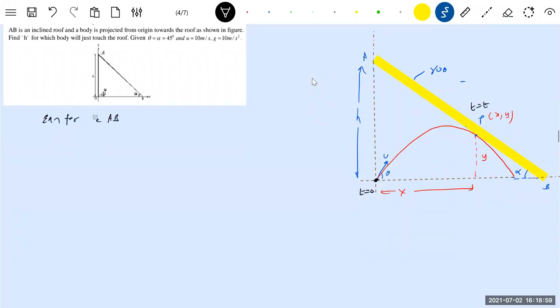Line or roof equation for roof AB. I think now you are all familiar it is a negative slope. Y equal to minus tan α x plus h. What is tan α? Alpha is 45 degrees, that is given, so therefore this will become minus x plus h. I think this is one primary equation.